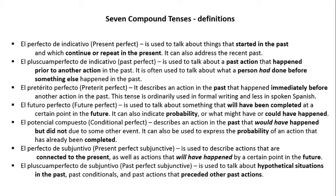Now these are the definitions of the seven compound tenses. El perfecto de indicativo, the present perfect, is used to talk about things that started in the past and which continue or repeat in the present; it can also address the recent past. El pluscuamperfecto del indicativo, the past perfect, is used to talk about a past action that happened prior to another action in the past — it is often used to talk about what a person had done before something else happened in the past. El pretérito perfecto, the preterite perfect, describes an action in the past that happened immediately before another action in the past; this tense is ordinarily used in formal writing and less often used in spoken Spanish.